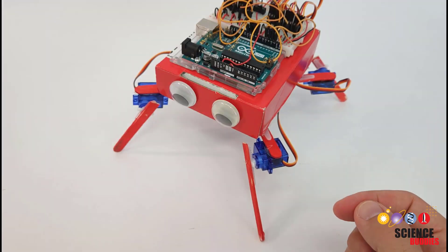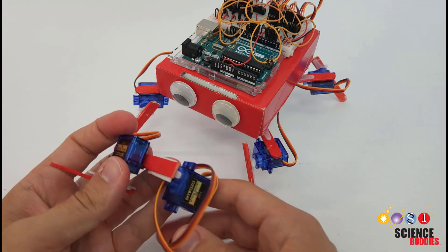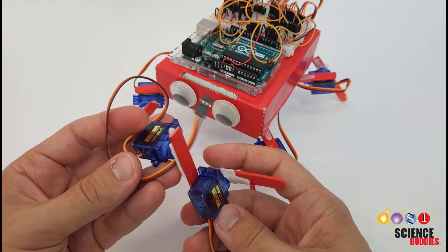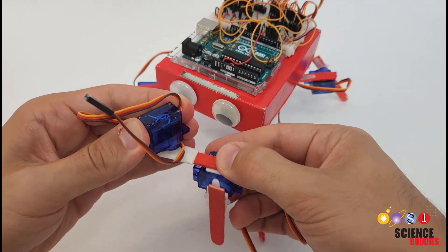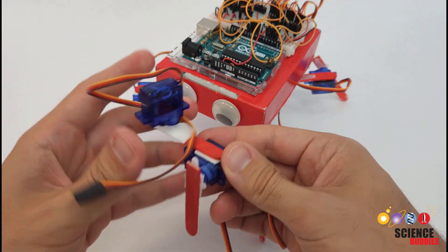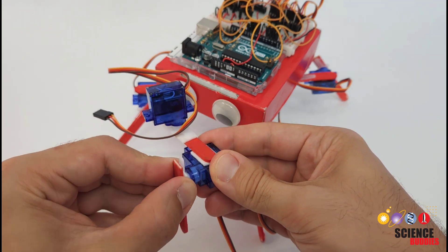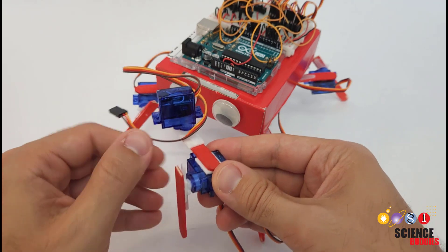I have a separate leg here that we can talk about to show how these work. Each leg is made from two servo motors. One acts as a hip joint that allows the leg to rotate back and forth and the other acts as a knee joint that lets the robot pick the lower part of its leg or the foot up off the ground.